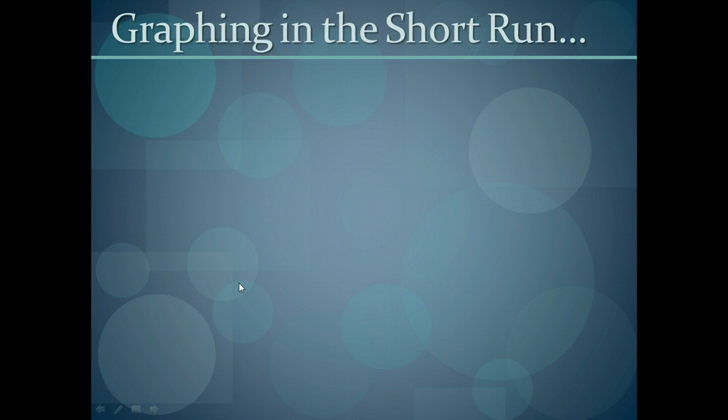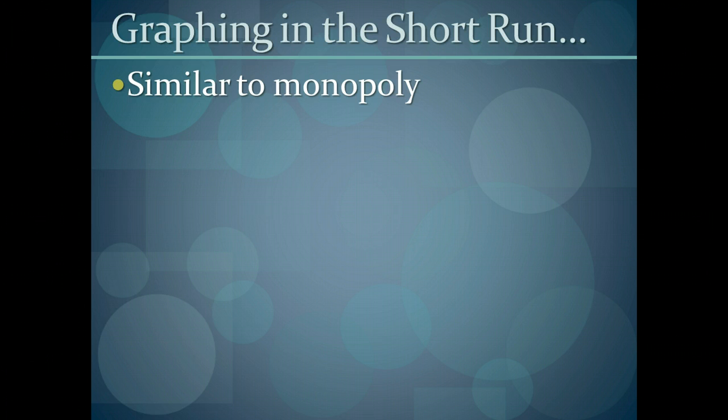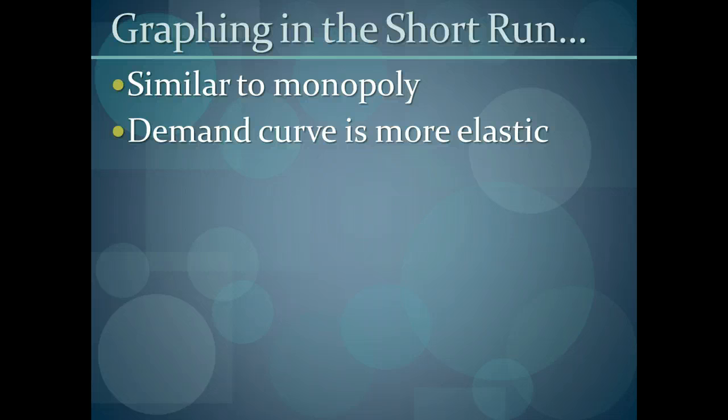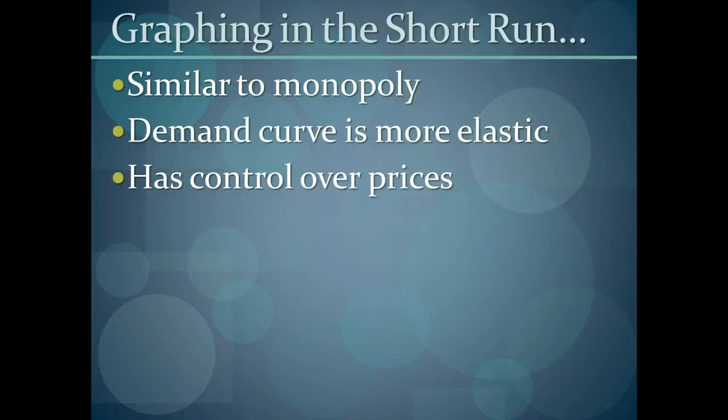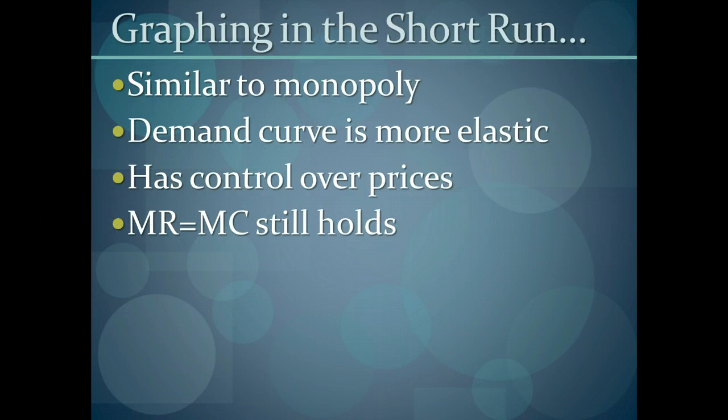When it comes to graphing monopolistic competition, in many regards it's very similar to monopoly. There's going to be a downward sloping demand curve that is generally more elastic than in a monopoly because of the fact that there are close substitutes to the product. Firms are going to have the ability to control their prices. That is that the maximizing quantity will be where marginal revenue equals marginal cost, but there is a demand price that is higher than that that will be charged. And so we're still going to follow through with the optimum output rule.